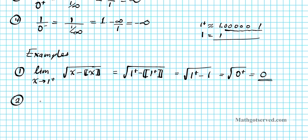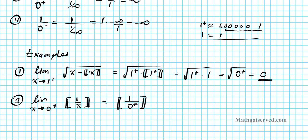Example two: find the limit as x approaches zero from the right of the greatest integer of one over x. We plug in zero from the right: greatest integer of one over zero from the right. One over zero from the right is one over an infinitely small positive number, which equals positive infinity. The greatest integer function of infinity is simply infinity, so the answer is infinity.